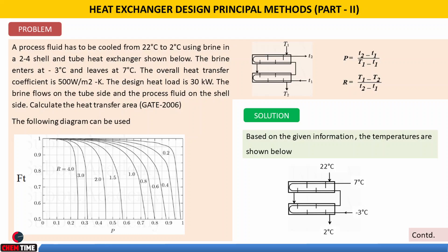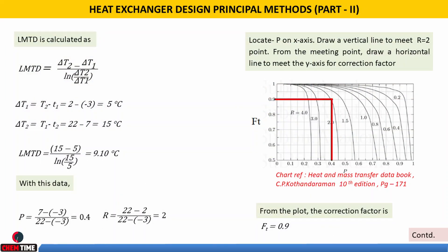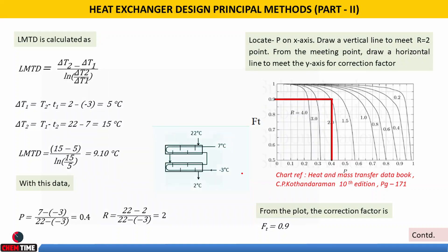With this, we can calculate the logarithmic mean temperature difference (LMTD): (ΔT2 − ΔT1) / ln(ΔT2/ΔT1). Here ΔT2 is the end difference 22 − 7 = 15, and ΔT1 is the end difference 2 − (−3) = 5. So the LMTD is (15 − 5) / ln(15/5) = 9.1°C.